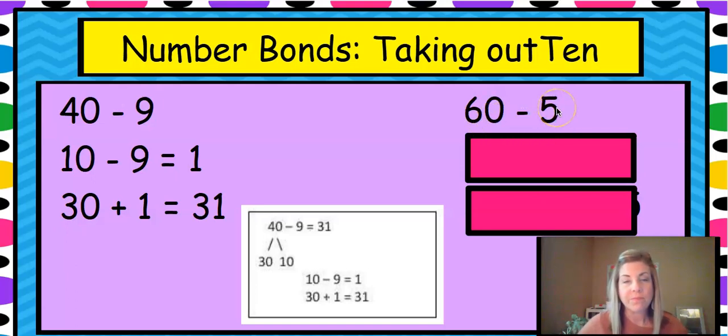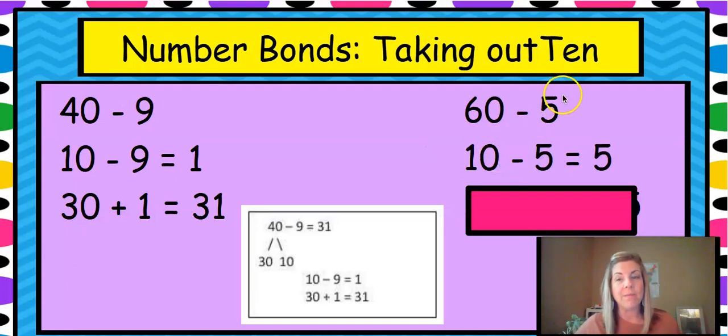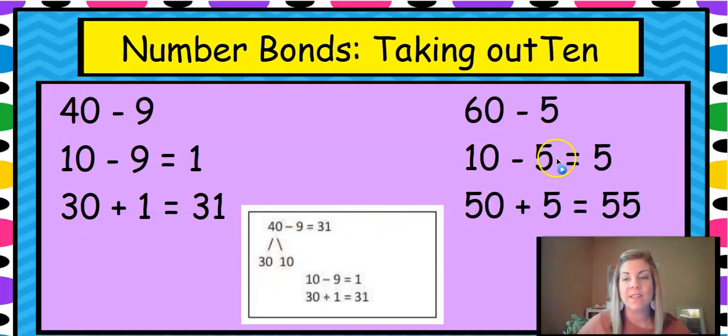So we're subtracting this from the 10 part and then we're adding everything else back in. 60 minus 5. What do you think our first step is? We are taking out 10. We're taking out 10 to make it easier to subtract. Good job. So we're going to take out that 10. 10 minus 5, we know. I say 5, you say 5. So we know that really, really quick. What's left? We still have 50 left. So 50 that's left, we're going to add what we ended up with from the subtraction back in and we get 55.